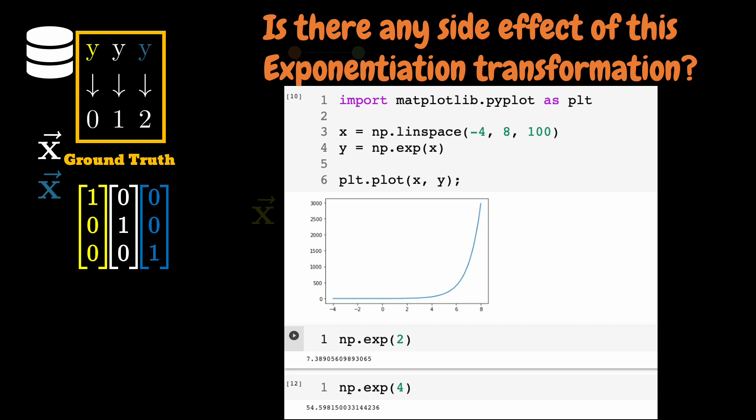You would agree with me that in the input space, the change from 2 to 4 is not as much as that it is in the output space. And I remind you again that we use exponential function as a transformation to artificially make our logits vector look like a probability distribution. So this transformation does have some artifacts that you should be aware of.